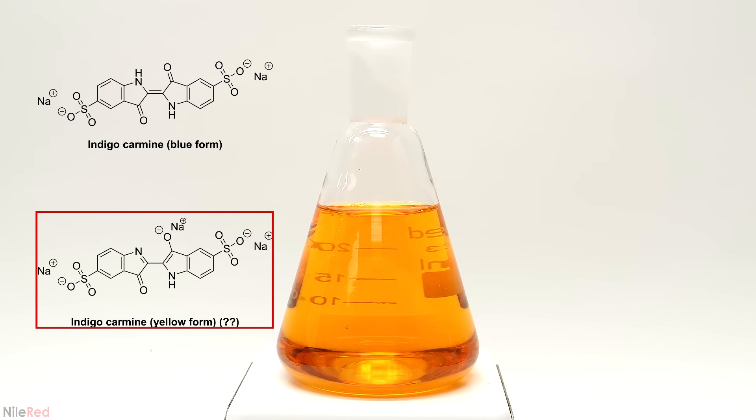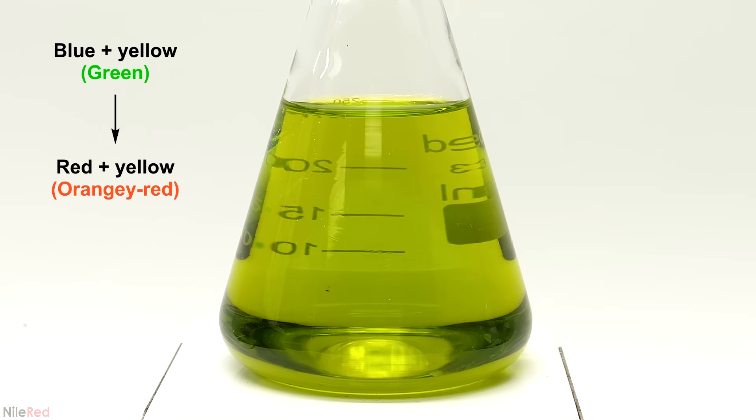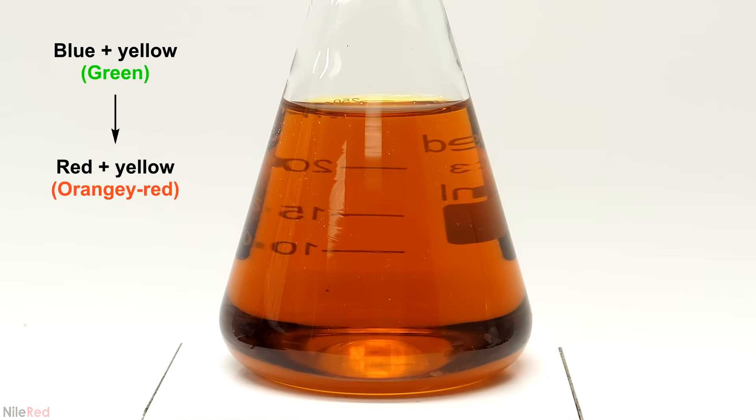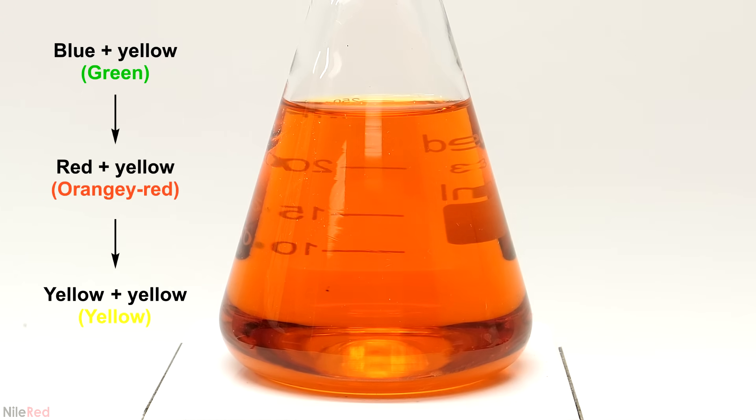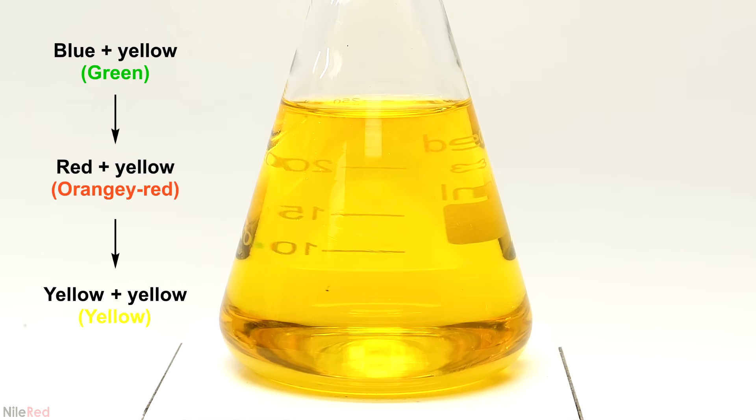One other thing that I wasn't able to find out was whether or not the yellow basic form of the indigo carmine was getting reduced as well. Every explanation that I saw was just for the regular blue form of it and nothing ever mentioned the yellow one. I think there is a chance that it might just be a spectator in this reaction and the color change is all because of the blue one. So for example as the blue one turned red the color changed from a mix of blue and yellow to a mix of red and yellow. Then when it was fully reduced it was a mix of yellow and yellow which of course just blended together.